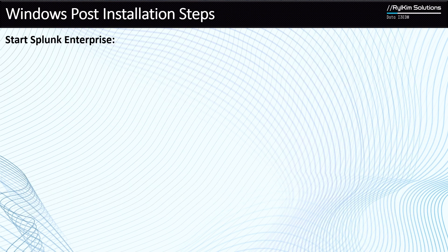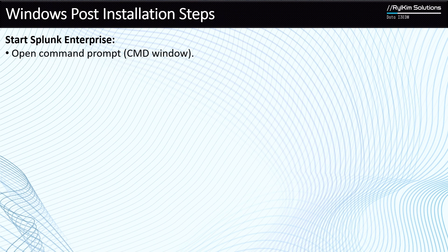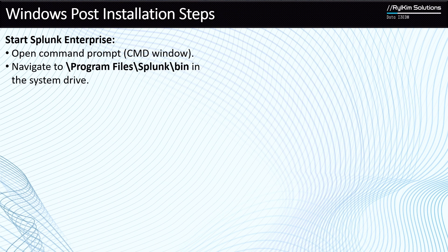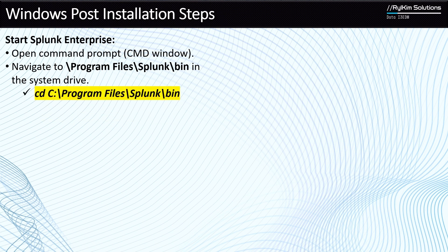After installing Splunk, there are some post-installation steps to ensure it functions correctly. The first thing is to start Splunk Enterprise using the command prompt. Navigate to Program Files\Splunk\bin — this is the Splunk home directory on Windows. The bin folder contains the Splunk binary, which accepts commands to perform actions in Splunk.